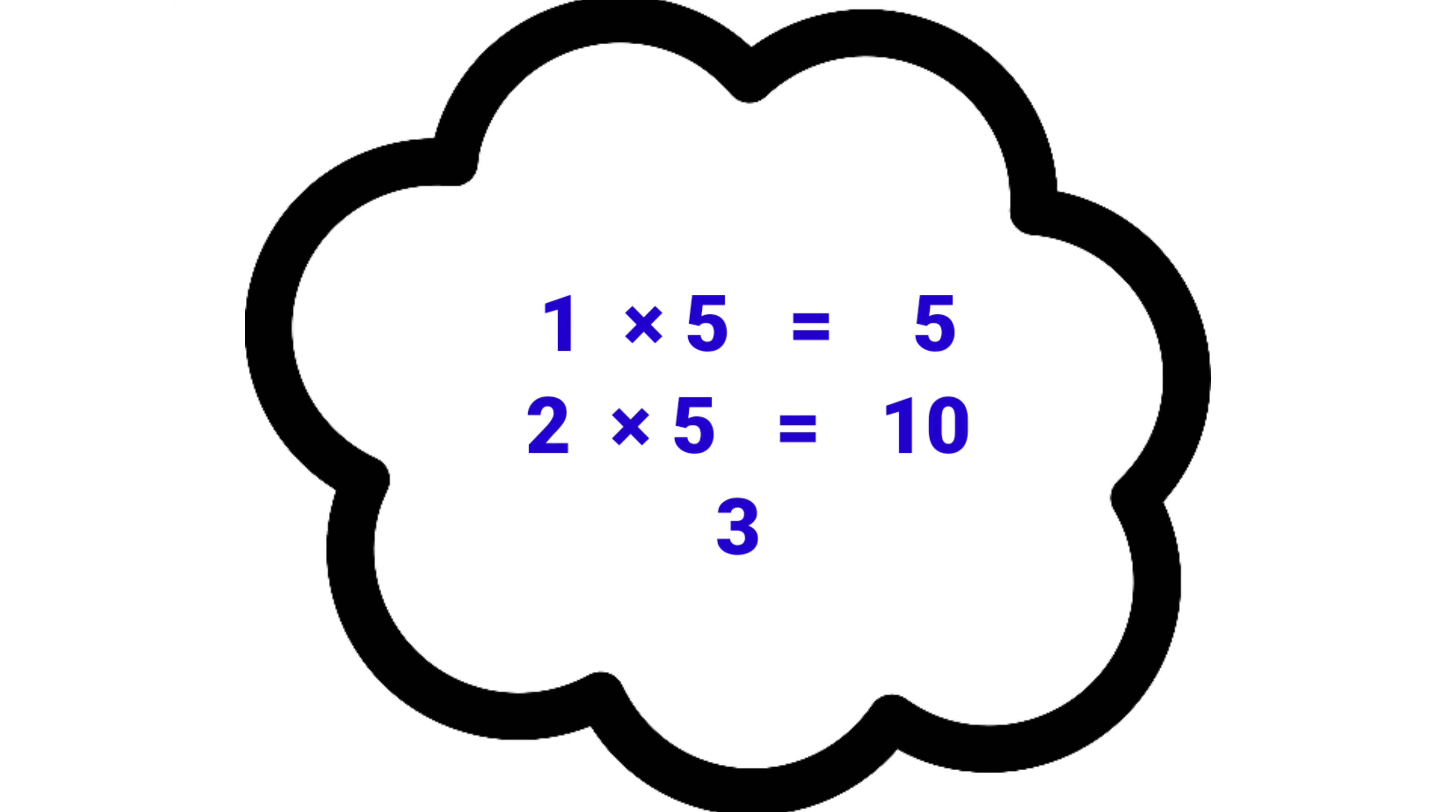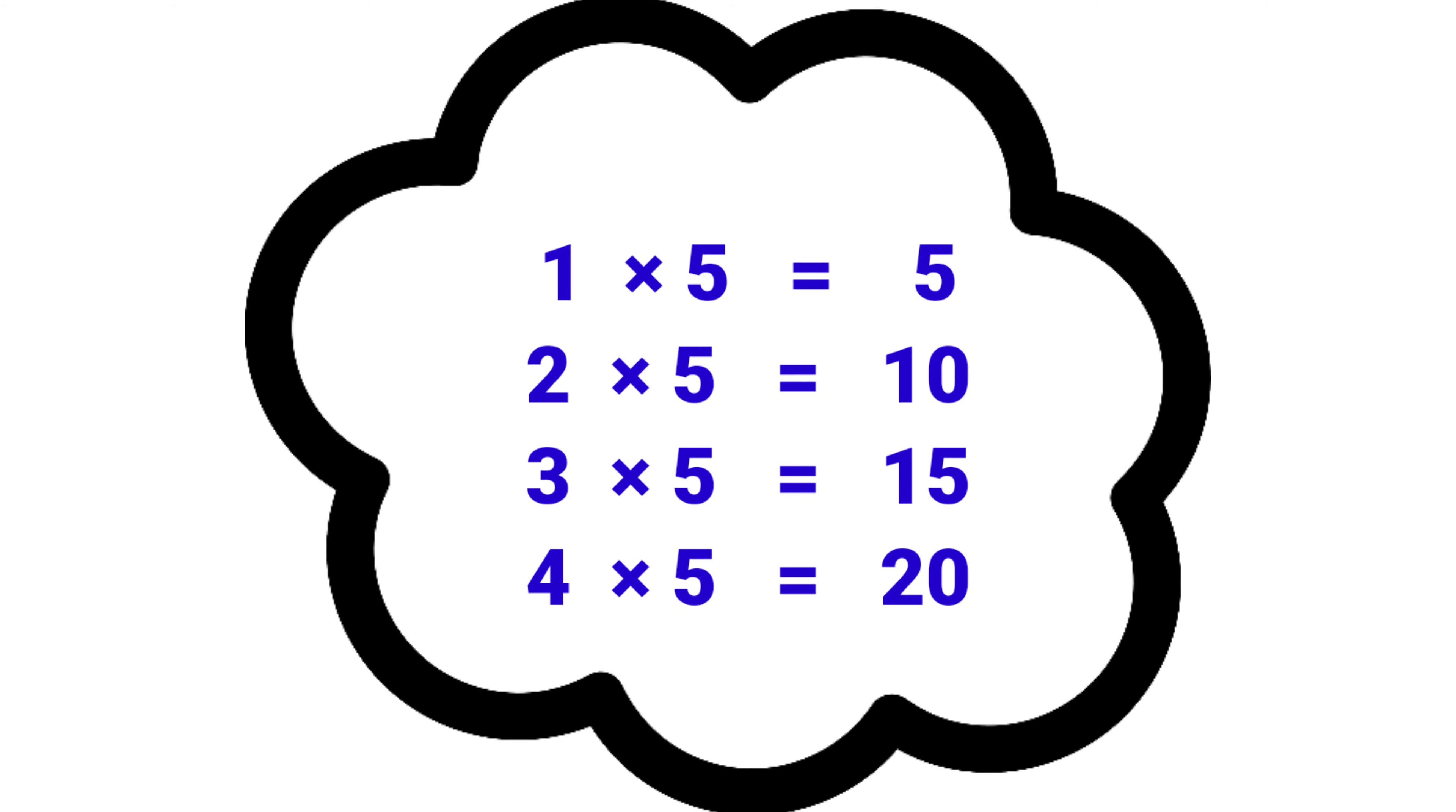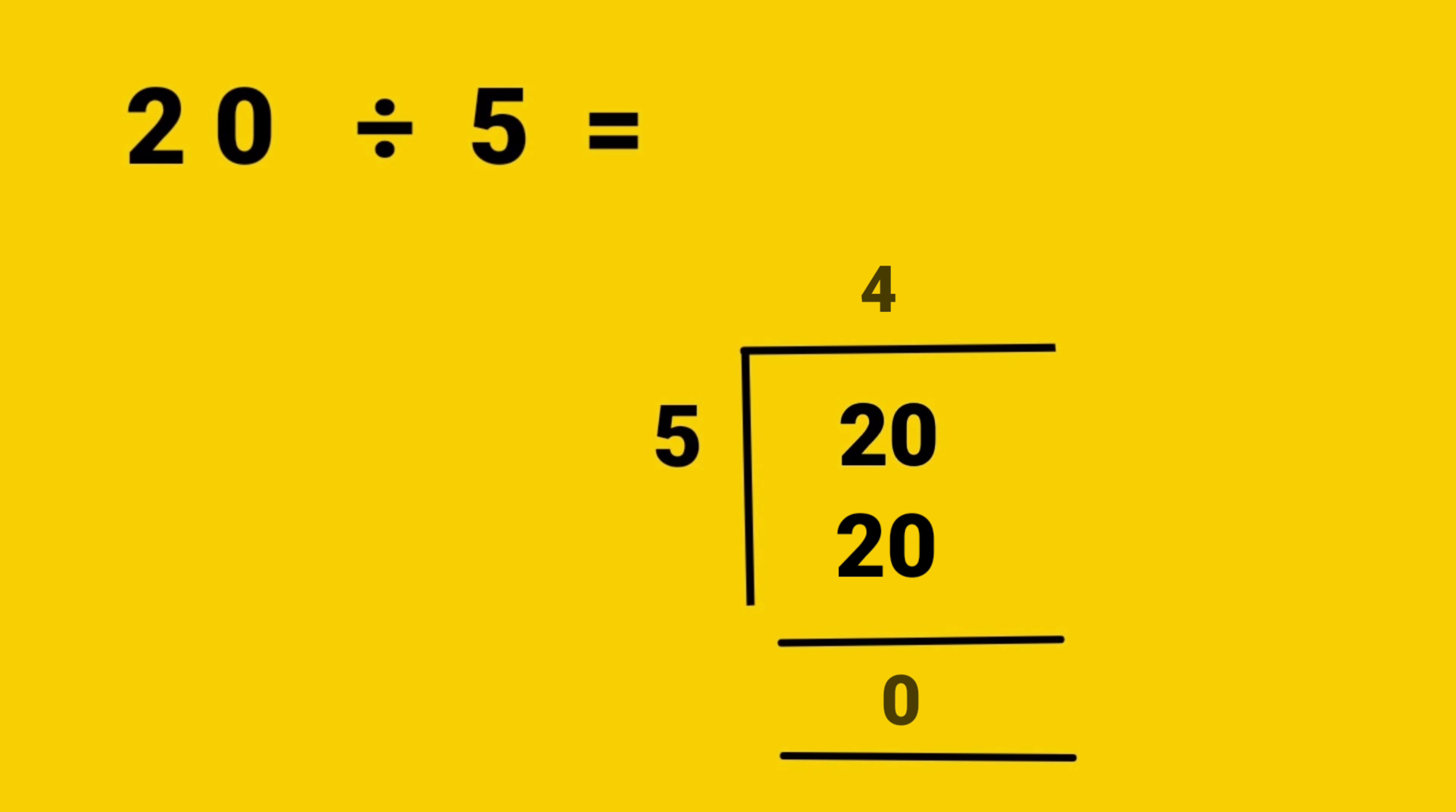1 fives are 5, 2 fives are 10, 3 fives are 15, 4 fives are 20. So, the answer is 20 divided by 5 is equal to 4.